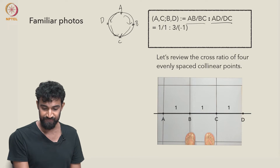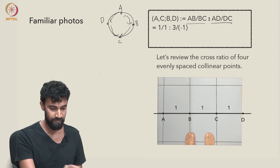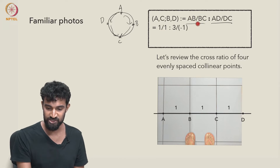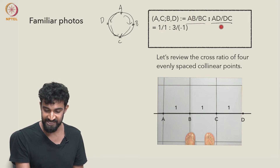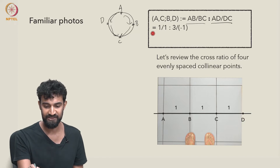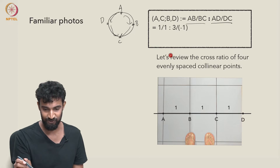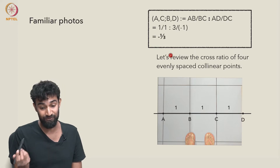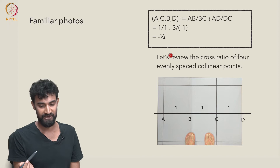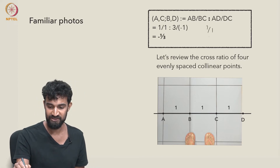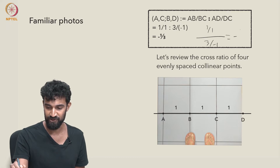So AB is 1, BC is also 1, AD is 3, and DC is negative 1. So we get that the cross-ratio is 1 over 1 divided by 3 over negative 1 — that's just negative 1 third.